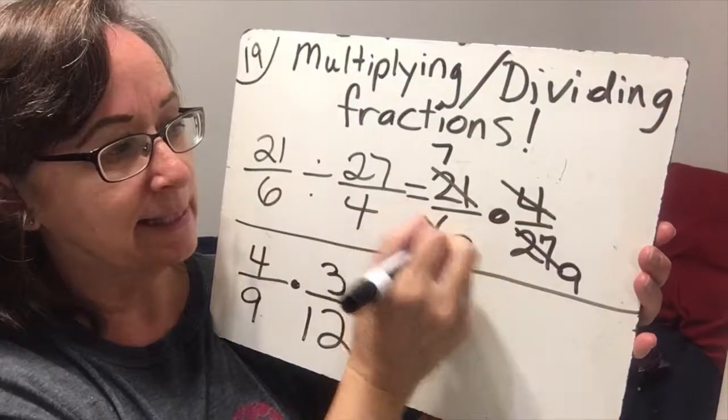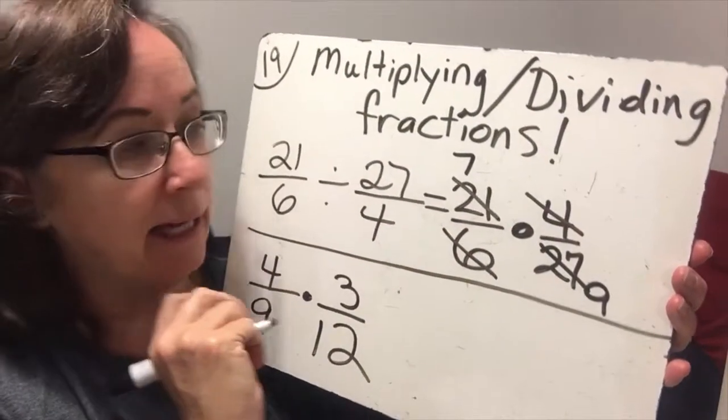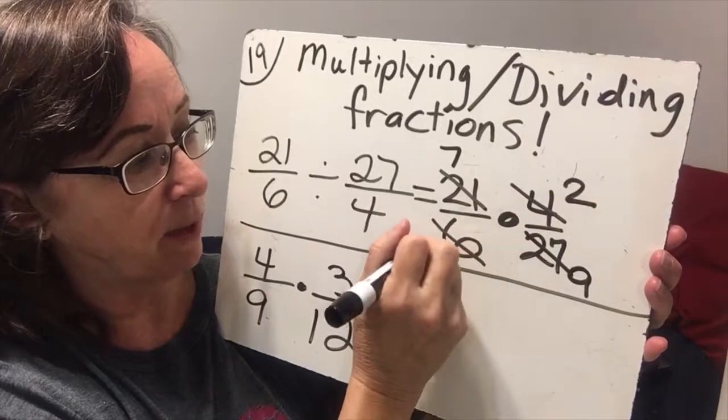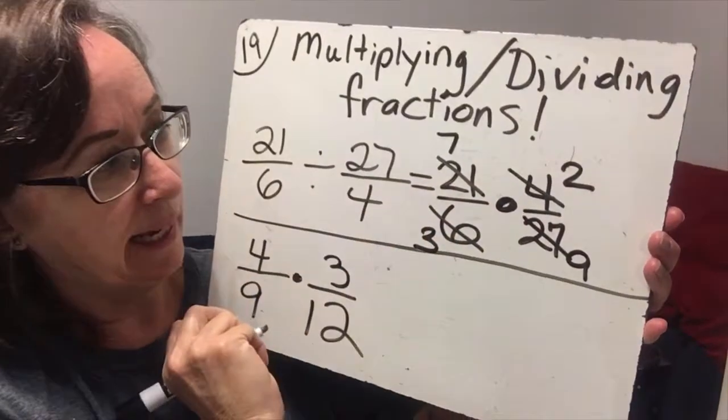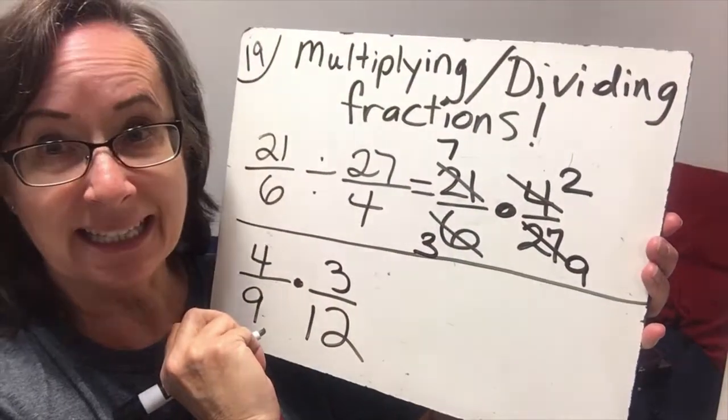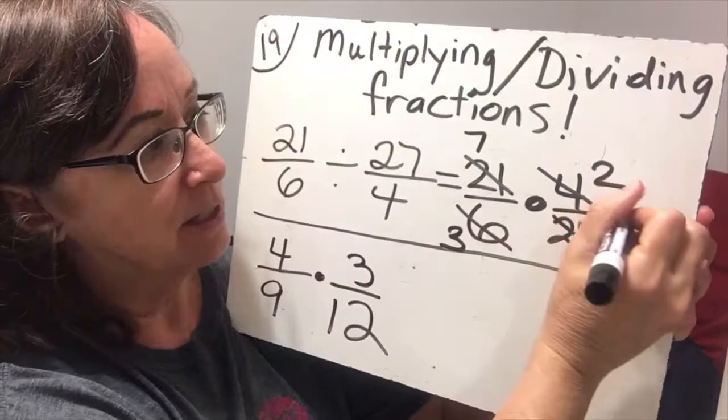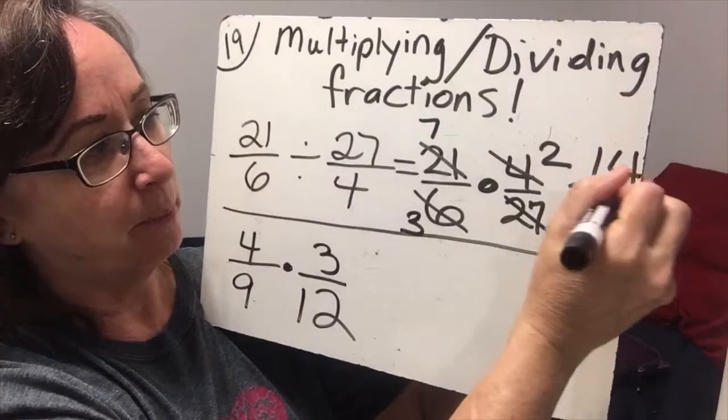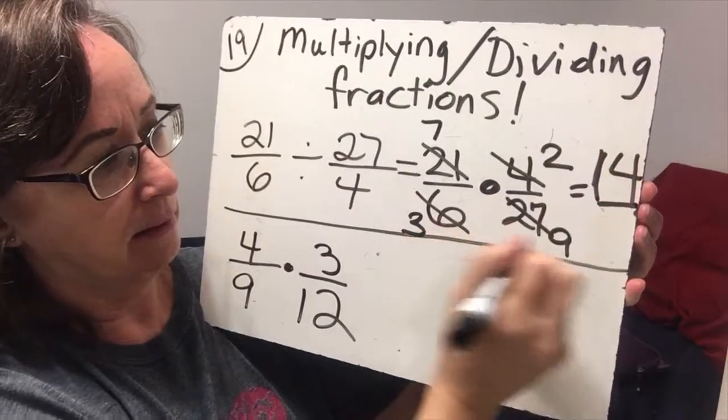And then 4 and 6 are both divisible by 2. So 4 divided by 2 is 2. 6 divided by 2 is 3. And everything is as simple as I can get it, isn't it? So we're going to wind up with 14 divided by 27.